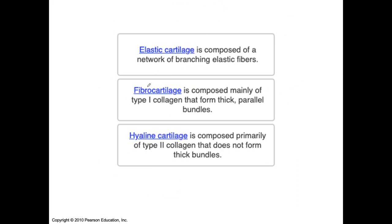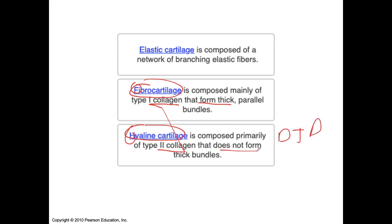Fibrocartilage compared to hyaline cartilage: hyaline cartilage is type 2 collagen fibers, whereas fibrocartilage is type 1. A helpful mnemonic — F comes before H in the alphabet, and 1 comes before 2. Fibrocartilage is the thick, strong type, whereas hyaline cartilage is associated with degenerative joint disease and does not form thick bundles. Elastic cartilage has more elastic fibers. When we come back, we'll talk about the skin.